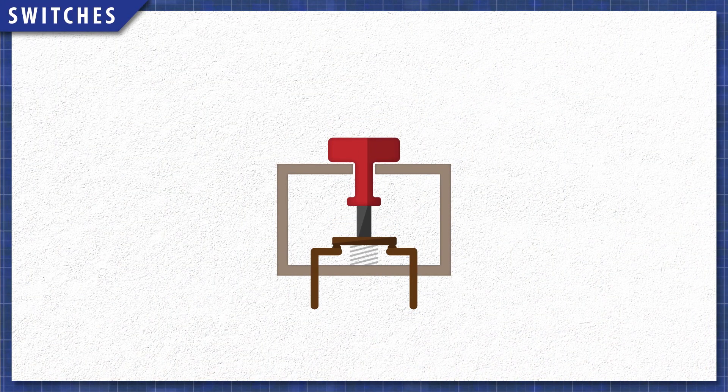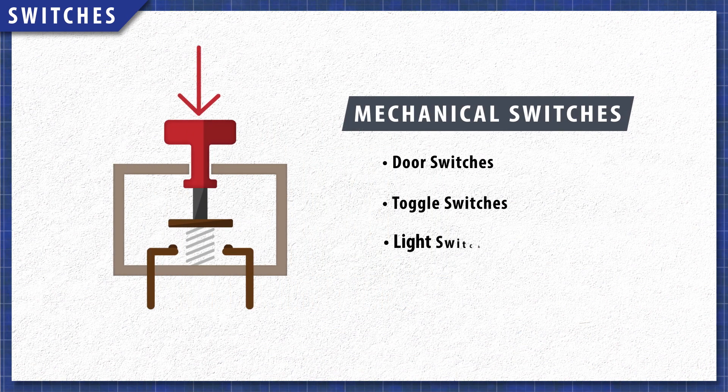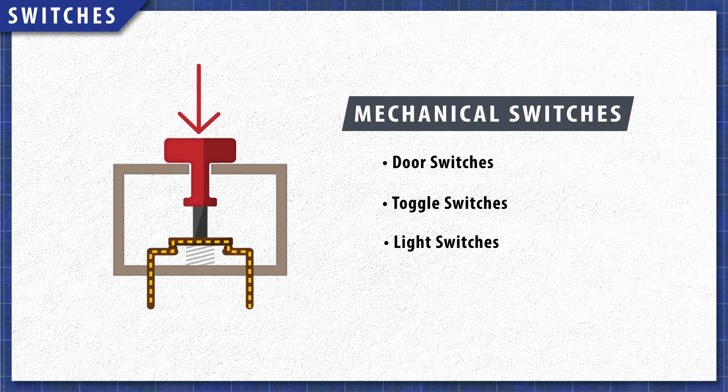Switches are components that connect and disconnect power in a circuit. Mechanical switches have contacts that are pressed together mechanically. This includes door and other toggle switches.